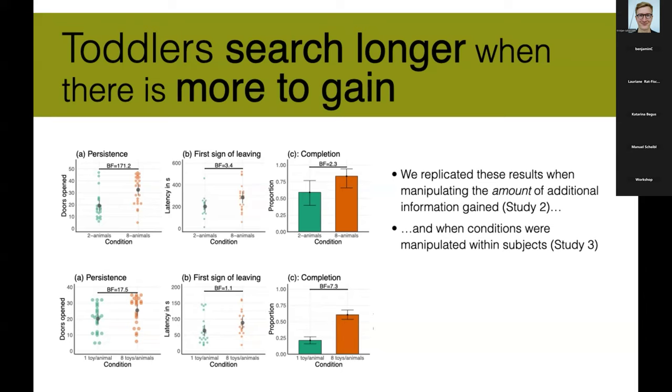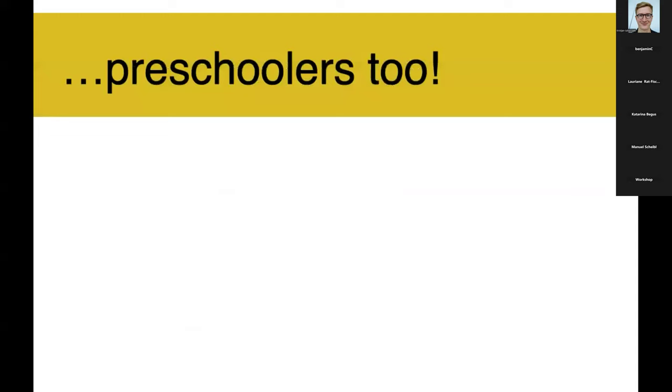So overall, these results indicate that in the absence of any rewards, toddlers or young preschoolers search is motivated by expected informativeness of the actions that can be performed, highlighting the importance for artificial intelligence, for example, to invest on curiosity-driven algorithms. So this study is published. And we have basically spent the last year and a half with Oana trying to replicate these results with older children and with adults. So I'm just gonna show you now the results we kind of managed to put together.